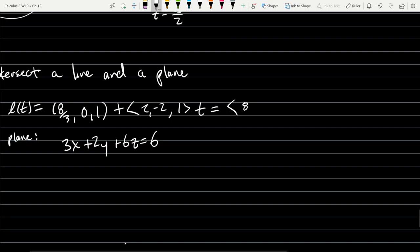So we have eight-thirds plus two t, that's our x, zero minus two t for the y, and then one plus t for z. I'll write x equals eight-thirds plus two t, y equals negative two t, z equals one plus t.